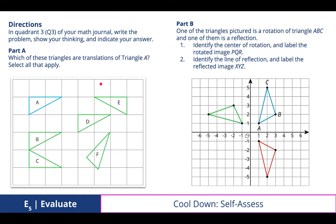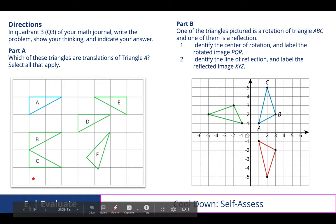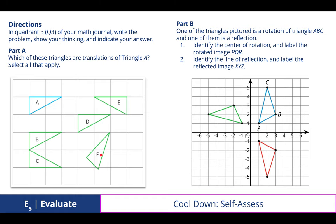In quadrant three of your math journal, write the problem, show your thinking, and indicate your answer. And so in which of these triangles are translations of triangle A, we discovered that D and B are both translations. However, E is a reflection about a vertical line, and C is a reflection about a horizontal line, where F is a rotation counterclockwise from our pre-image A.